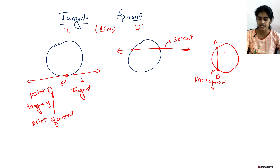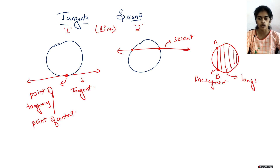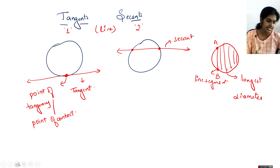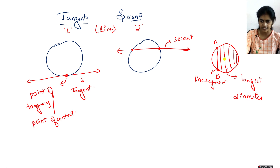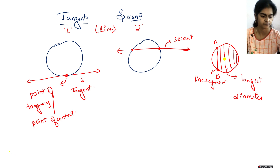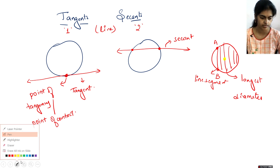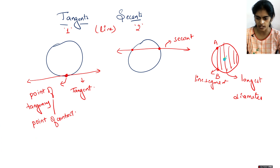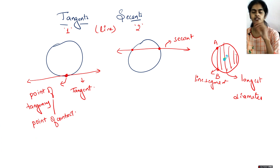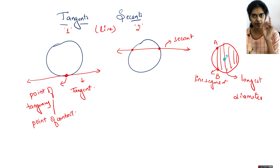One more important point: which is the longest chord? The longest chord is the diameter. Diameter is the longest chord and it passes through the center. The diameter is the line segment which passes through the center and touches two points on the circle.